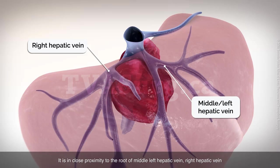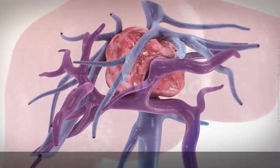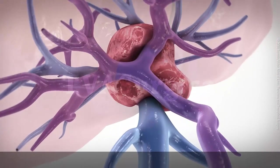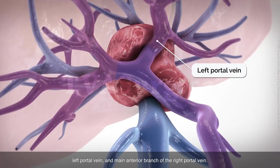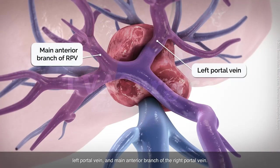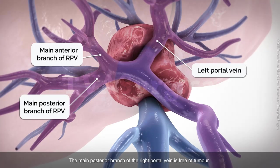The mass is also in close proximity to the left portal vein and main anterior branch of the right portal vein. The main posterior branch of the right portal vein is free of tumor.